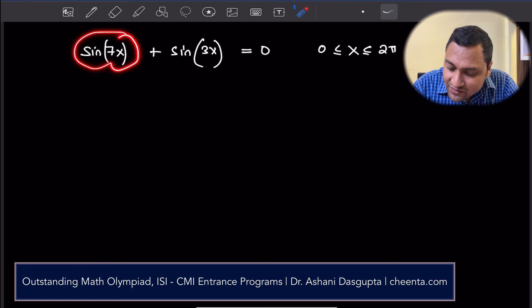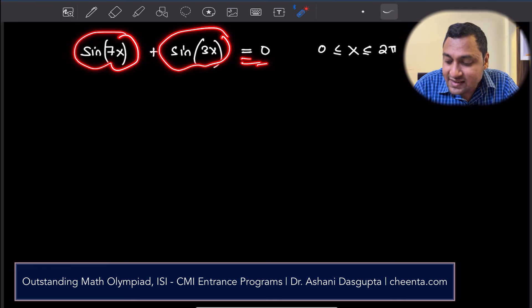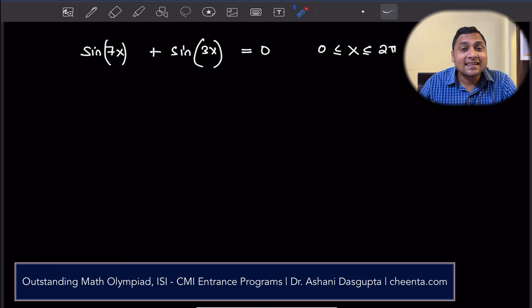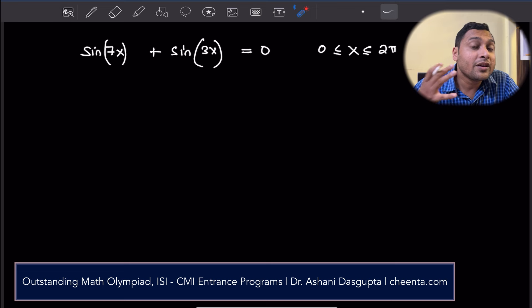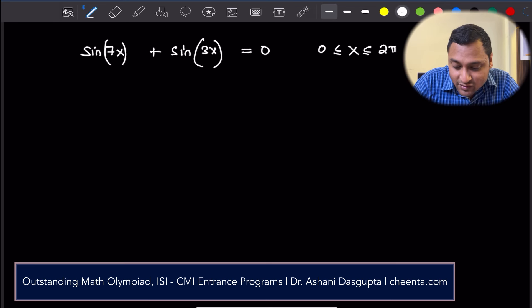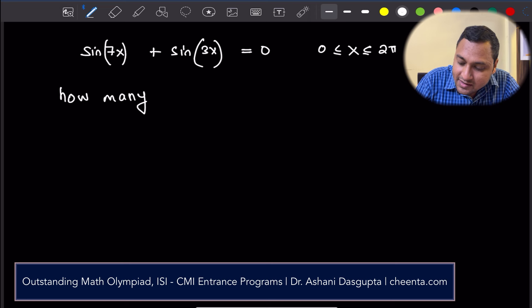sin(7x) + sin(3x) = 0. This is the equation. It's given that x is between 0 and 2π and we want to know for what values of x there is a solution. How many values of x? The question is how many solutions?